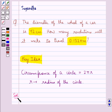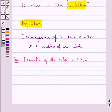Now we move on to the solution. We are given that the diameter of the wheel is equal to 42 cm. So the radius of the wheel which is equal to r is equal to 42 upon 2 equal to 21 cm.